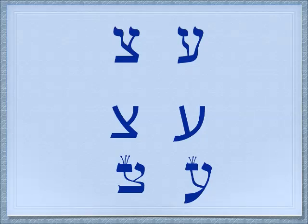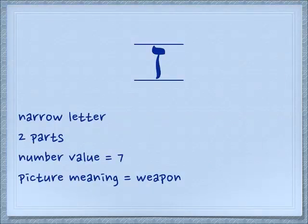The Ayin is actually a silent letter — all we will hear is the vowel associated with it. The Zayin, which makes a Z-Z-Z sound, is a narrow letter. It has two parts: a little hat on top and then a stroke coming down. Its number value is seven and its picture meaning is weapon.